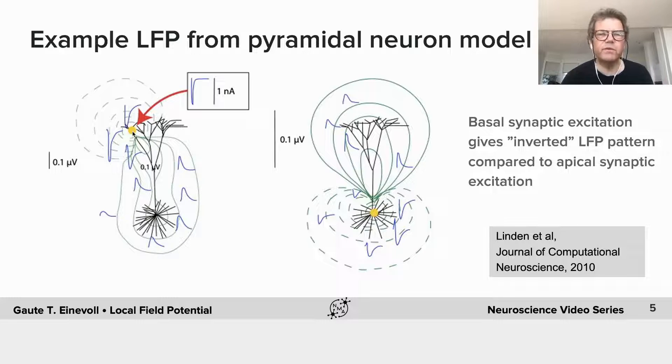But also we see that the position of the synapse, when you vary the position of the synapse, the pattern can change completely. It sort of changes sign. So with many synaptic inputs, you can get all kinds of cancellation effects.